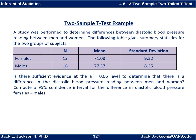Here's an example. A study was performed to determine differences between diastolic blood pressure readings between men and women. The following table gives summary statistics for the two groups: 13 females with a mean of 71.08 and a standard deviation of 9.22, and 16 males with a mean of 77.37 and a standard deviation of 8.35. The question is whether there is sufficient evidence at the alpha equals 0.05 level to determine that there is a difference in diastolic blood pressure between men and women. We'll also compute a 95% confidence interval for the difference, doing females minus males.